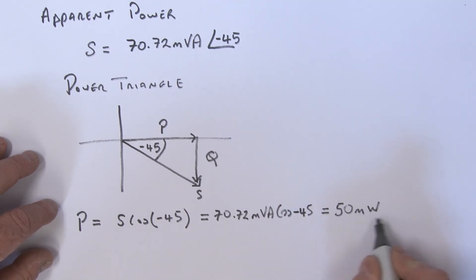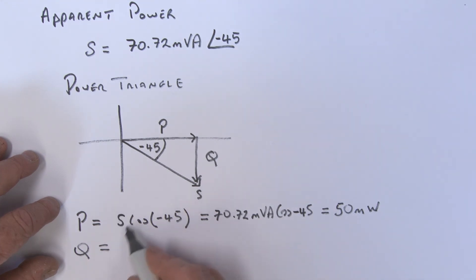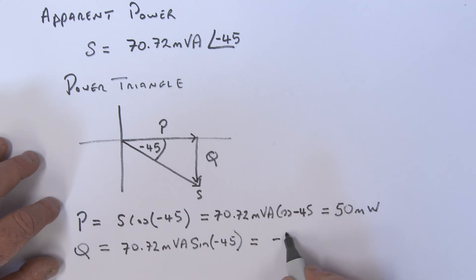That's an actual power dissipation - it's a true power, it's a real power dissipation. Q, the reactive power, what is that? That is equal to again S, which is the 70.72 milli-VAs, times the sine of minus 45 degrees, and if we work that out, that comes out to be a minus 50.